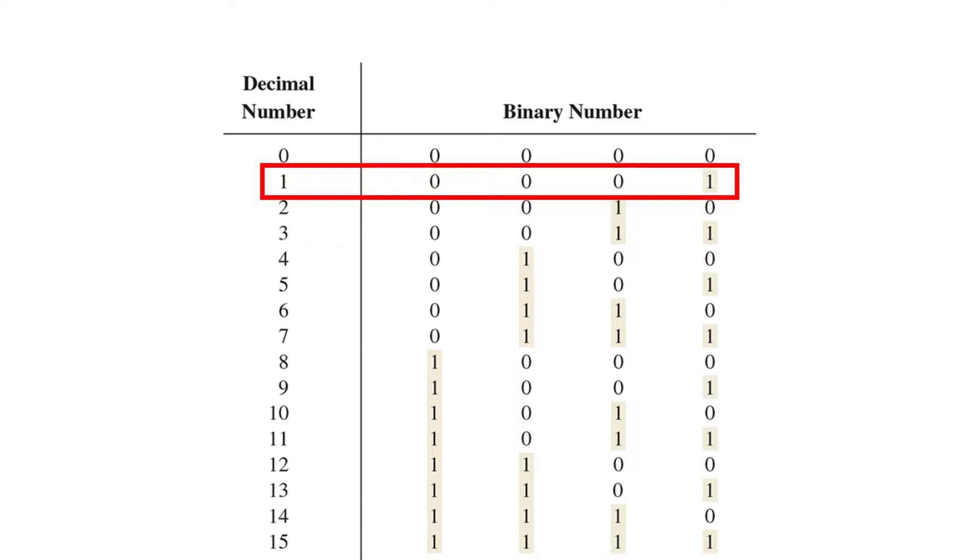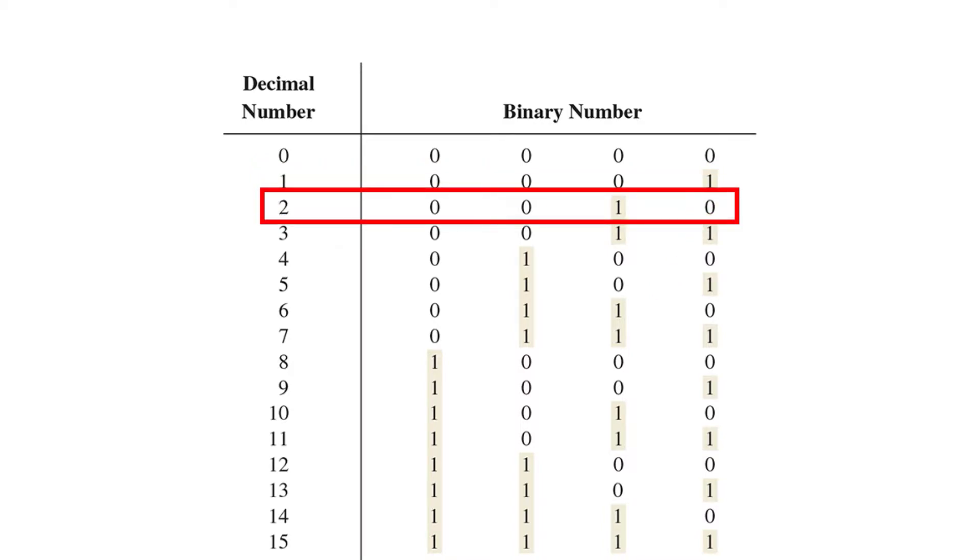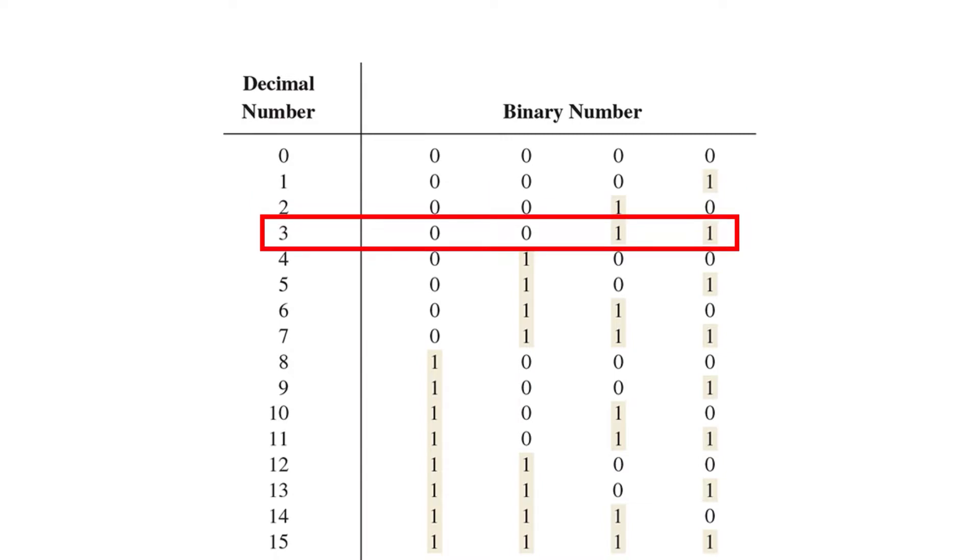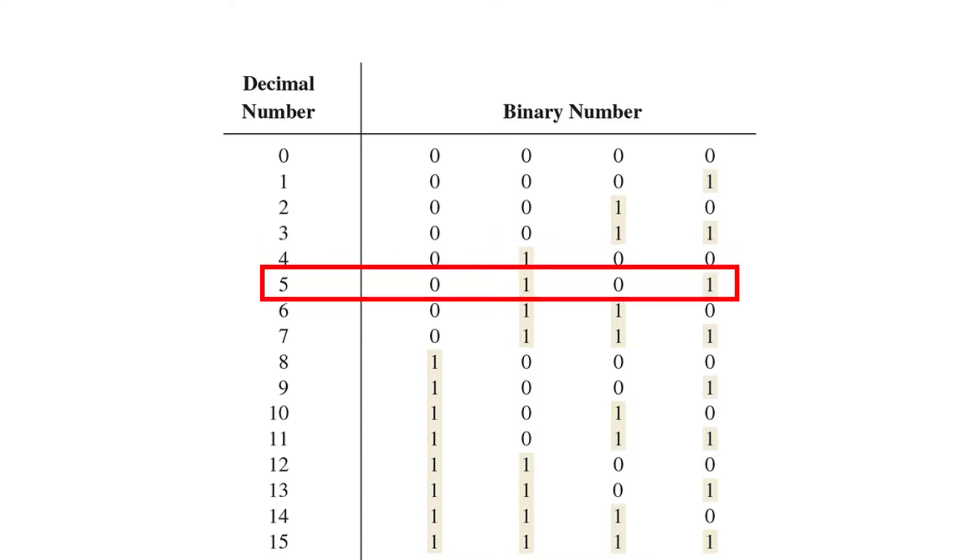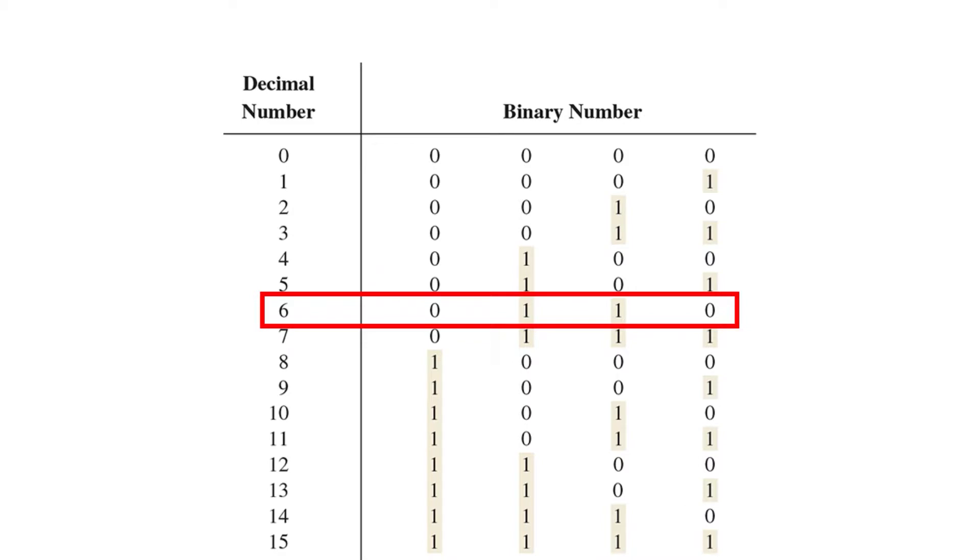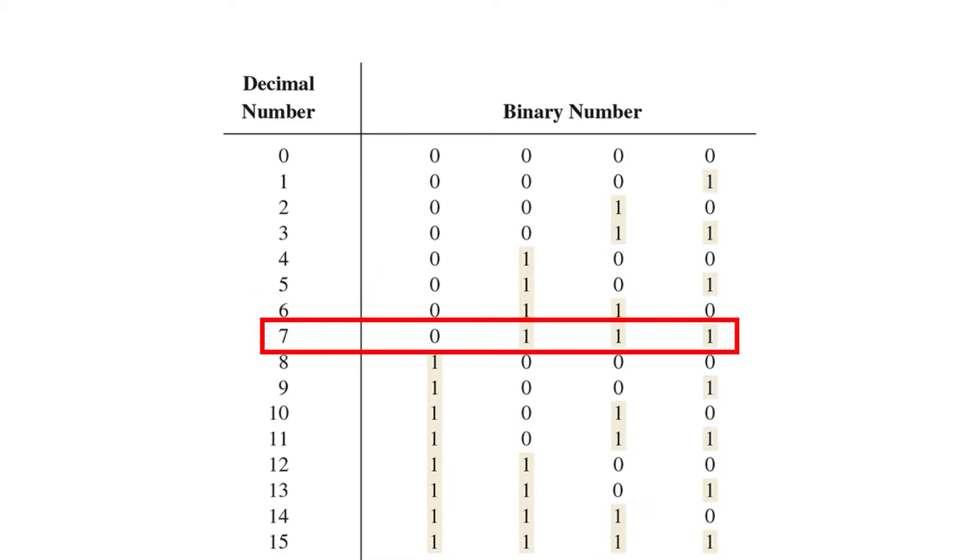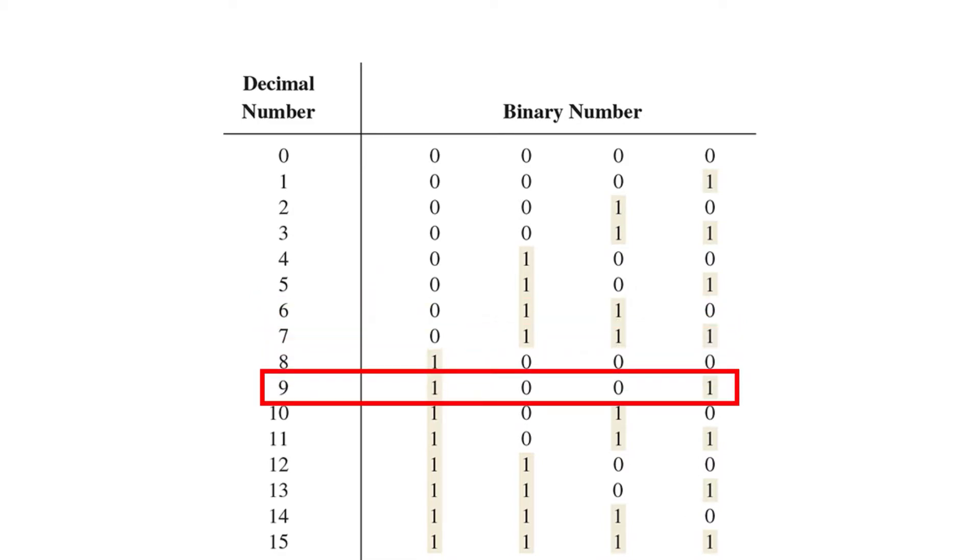0 is 0, 1 is 1, and now we've run out of binary digits. So we add 1 to the tens place and start over in the ones place. This means that a decimal number 2 is 10 in binary, 3 is 11, and again we've exhausted our binary numbers. Adding 1 to the tens place gives us 10, so we add 1 to the hundreds place. So 4 in binary is 100.